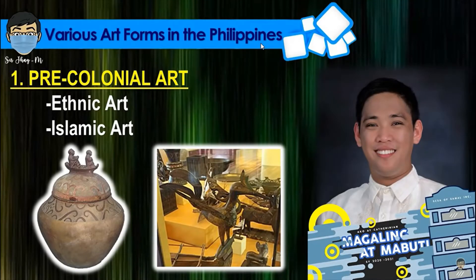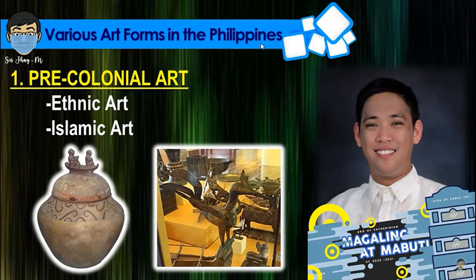When we say pre-colonial arts, it refers basically to the ethnic arts and Islamic arts because in Philippine history these are the periods when the foreign colonizers had not yet arrived. Most of the artworks recorded have a unique identity or distinction from our ancestors or early Filipinos — this is the face of our traditional arts. Examples include the pottery and ritual arts of ethnic groups, as well as the Sarimanok design of the Islamic region in the country.